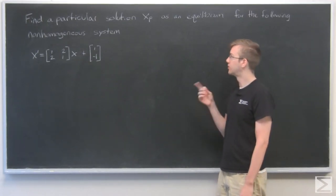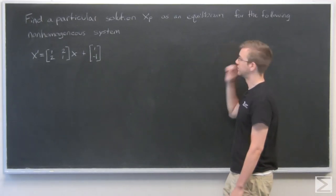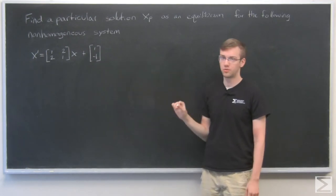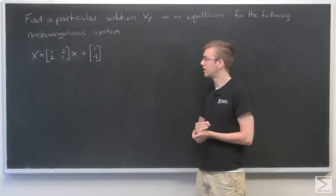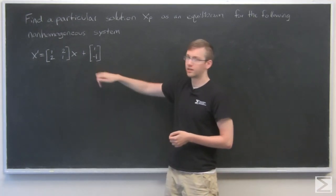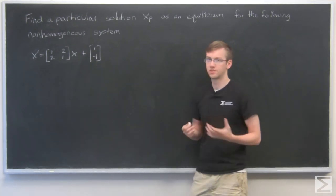For this problem, we want to find a particular solution, xp, as an equilibrium for this non-homogeneous system. So this problem looks pretty simple for us. As we can see, this constant right here, there's no t's in it, and that makes the system autonomous.